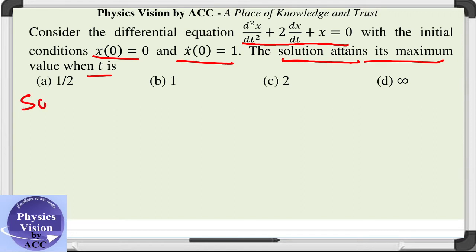Let us solve the differential equation first, which can be written as (D² + 2D + 1)x = 0. The auxiliary equation D² + 2D + 1...